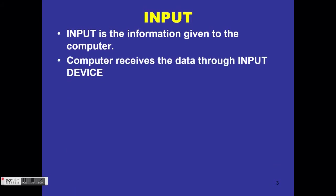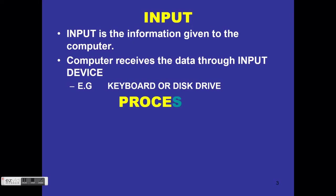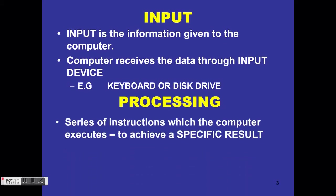Input is the information given to the computer. Computer devices receive the data through input devices, for example a keyboard or a disk drive — the drive that you put a CD or DVD in. Processing is a series of instructions which the computer executes in order to achieve a specific result.